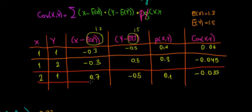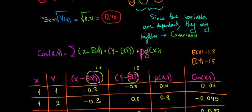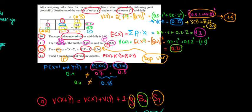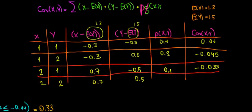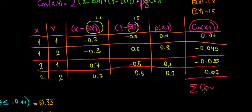One last combination: x=2, y=2. The difference between x and the expected value of x is 0.7. The difference between y=2 and the expected value of y (1.5) is 0.5. The probability of x=2, y=2 from the table is 0.2. Multiplying gives 0.07. Adding all four products — 0.06 minus 0.045 minus 0.035 plus 0.07 — the total covariance between x and y equals 0.05.